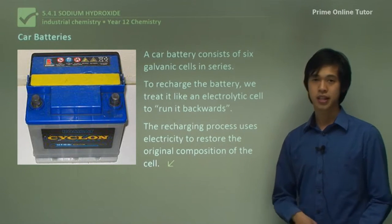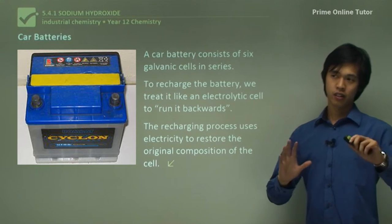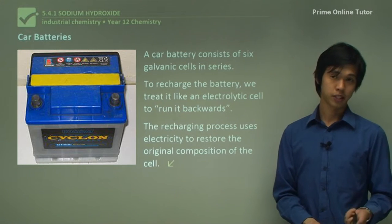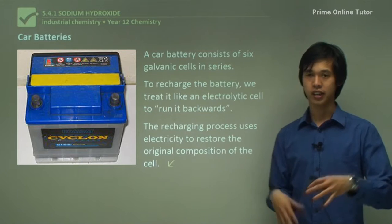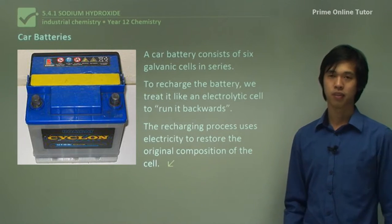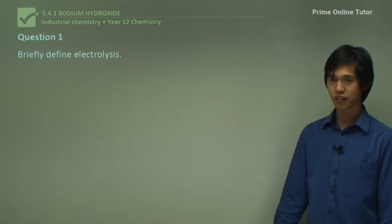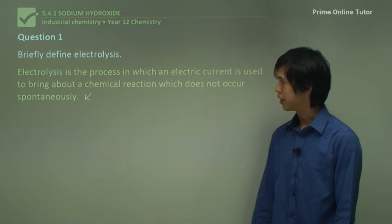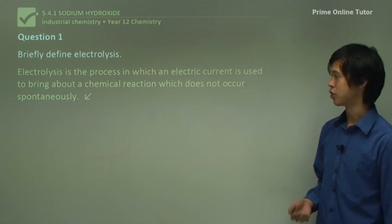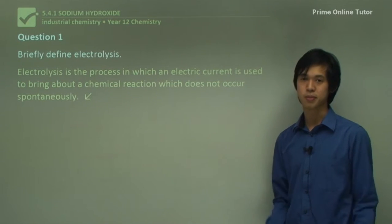That wraps up today's review of electrolytic and galvanic cells. Hopefully you've remembered all these things we learned in production of materials, and you'll now be ready to study sodium hydroxide production in future lessons. Moving on to the question segment: briefly define electrolysis. Electrolysis is the process in which electrical current is used to bring about a chemical change which would not occur spontaneously.